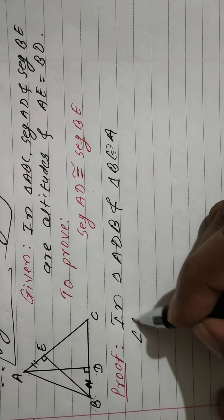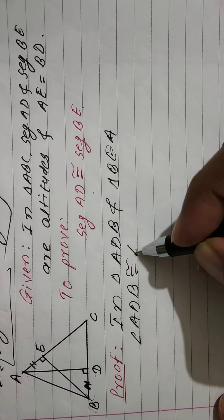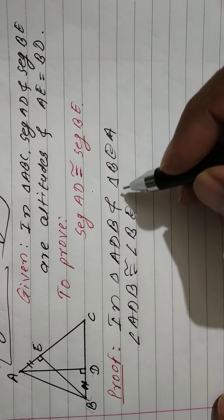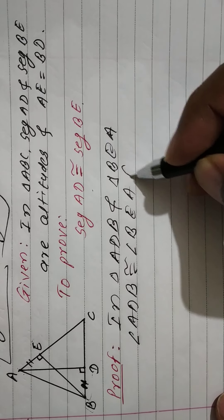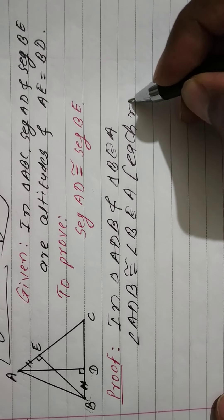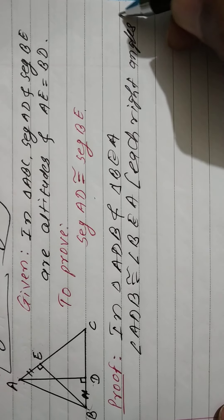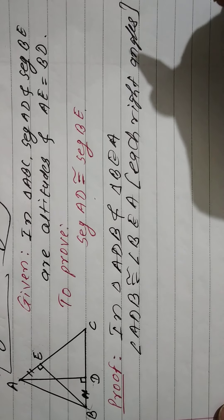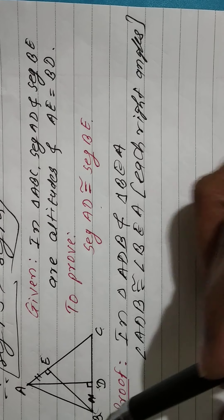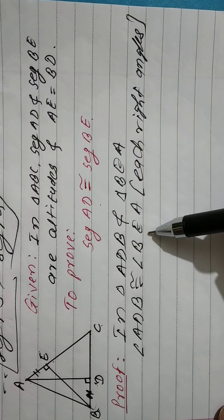Angle ADB is congruent to angle BEA — each is a right angle, each 90 degrees — because AD is perpendicular to BC and BE is perpendicular to AC.